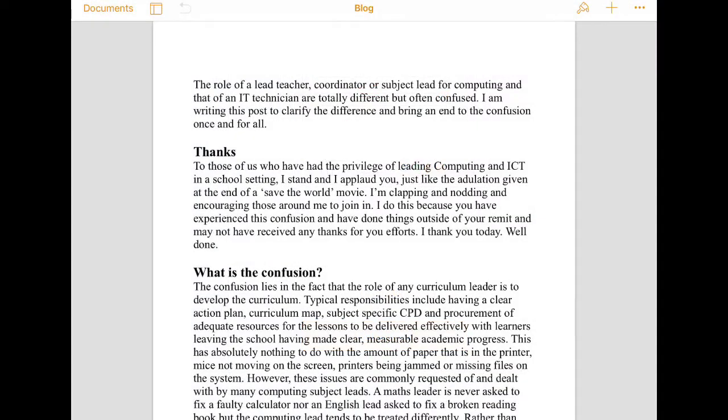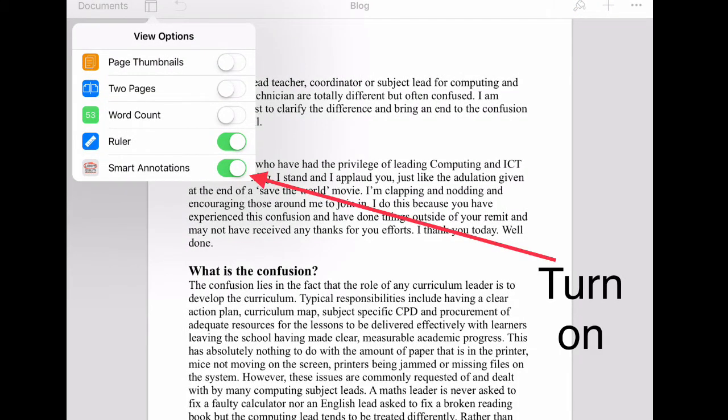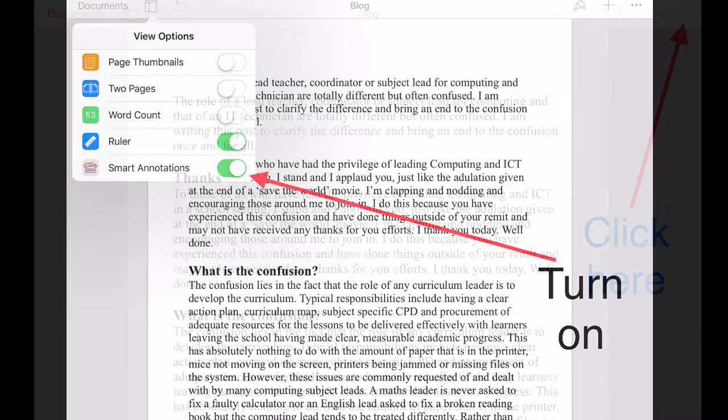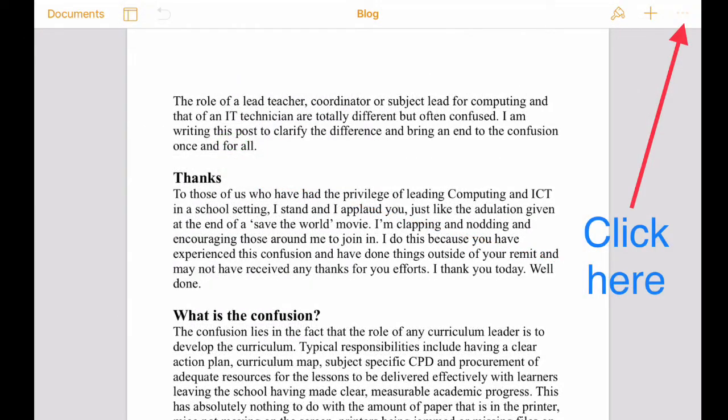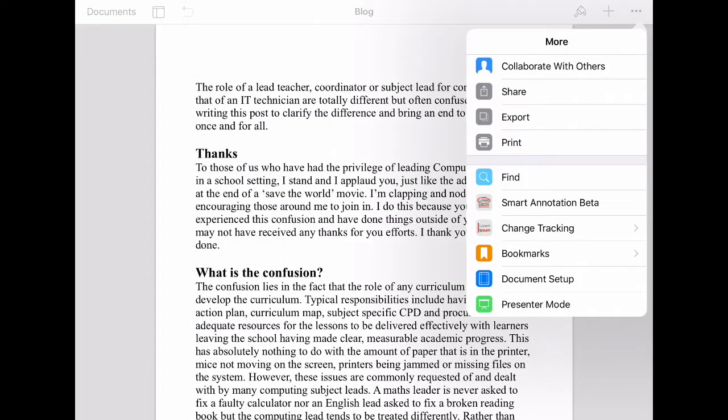First of all, we'll check in the Pages options, the view options, and make sure that Smart Annotation is turned on. Then we can go over to click on the three dots in the top right corner. This will open up the options and you'll be able to see Smart Annotation beta and you can click that.